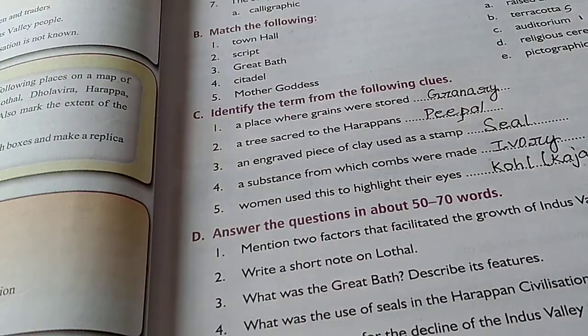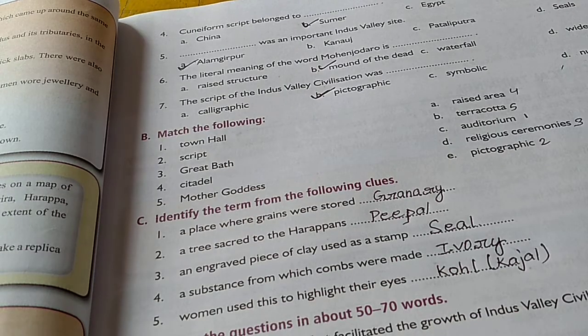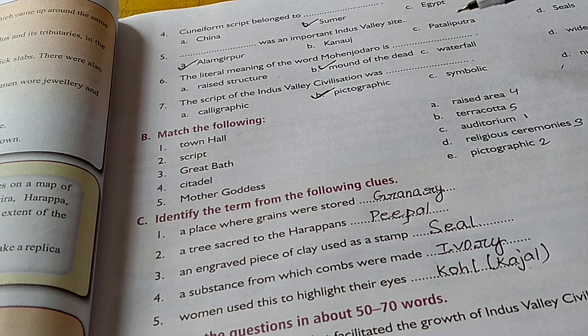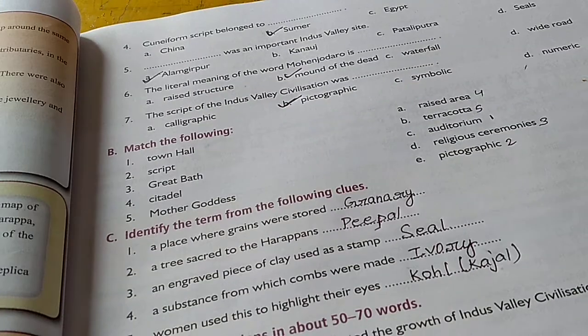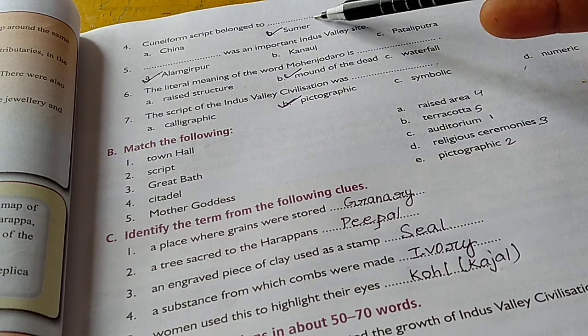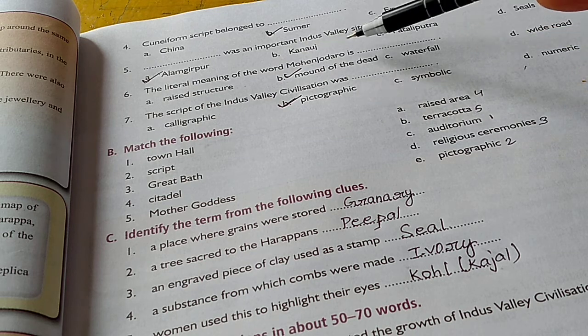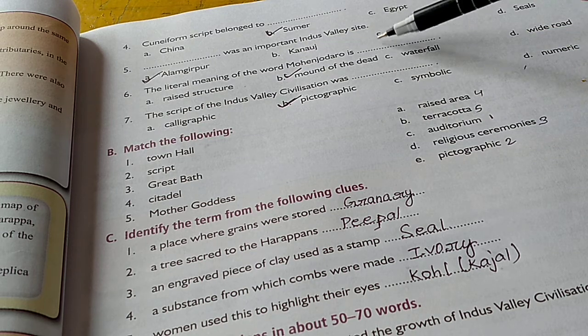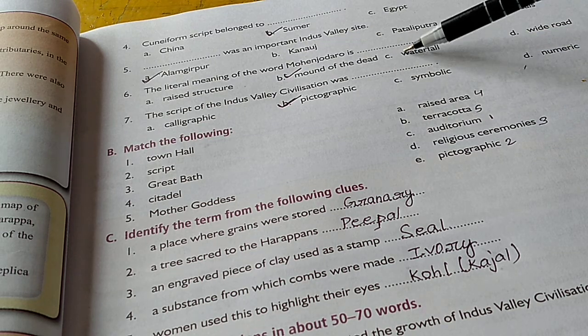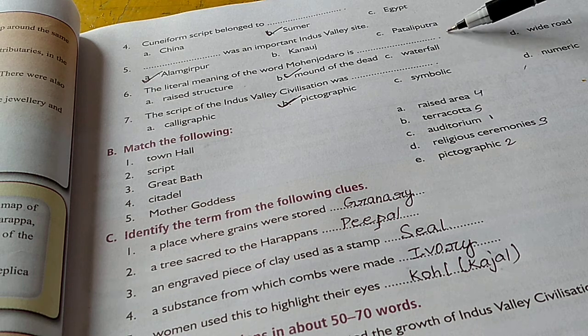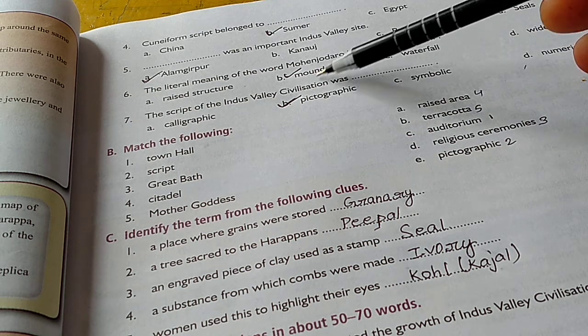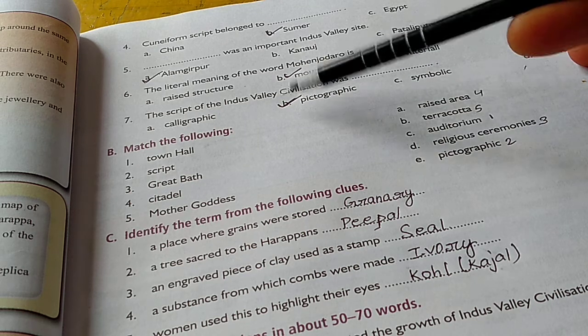The fourth question: the cuneiform script belonged to Sumer, the Sumerian civilization. The fifth: Alamgirpur was an important Indus valley site.